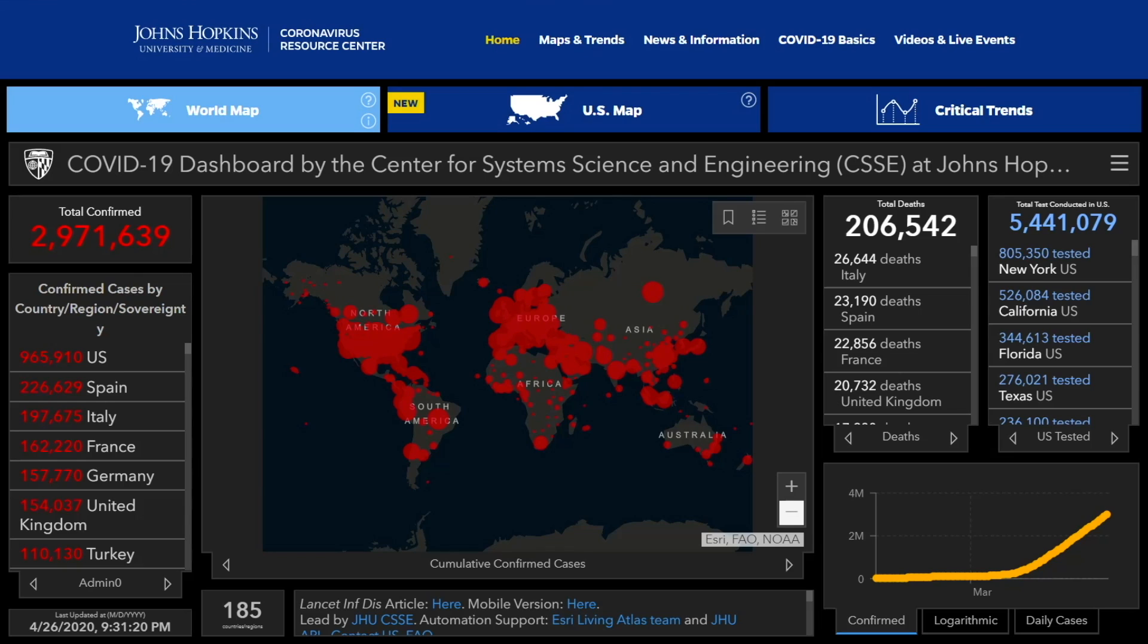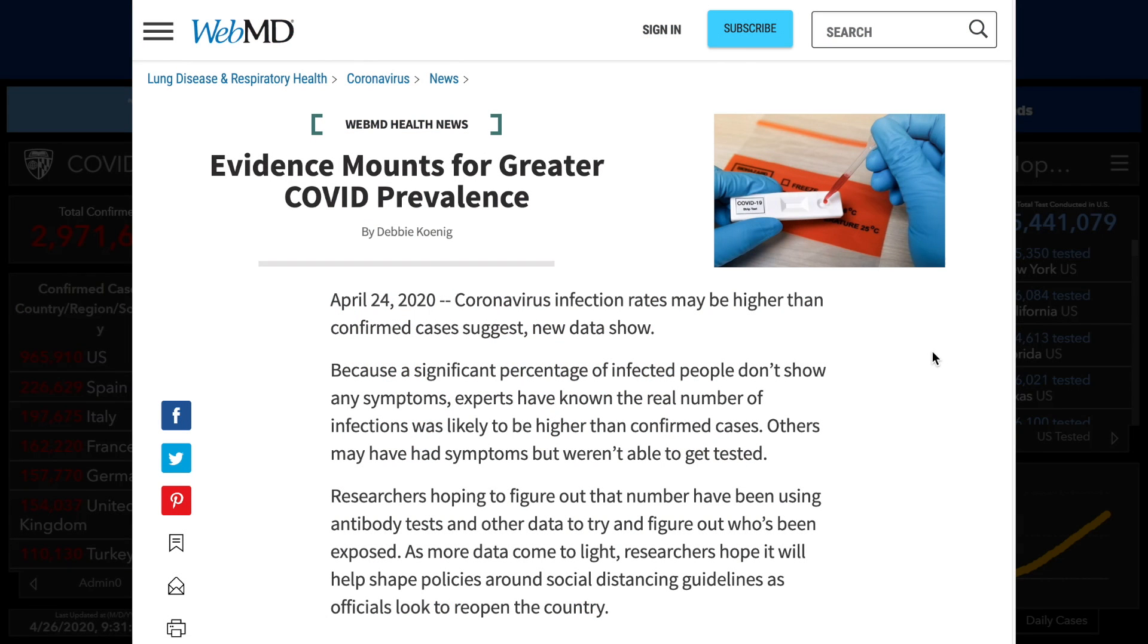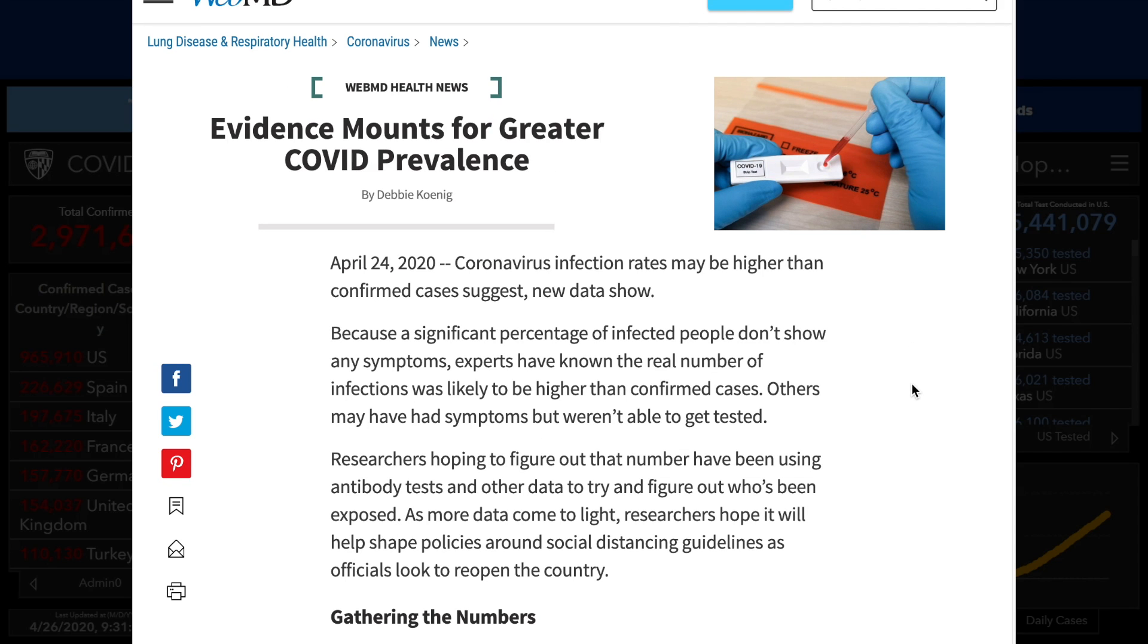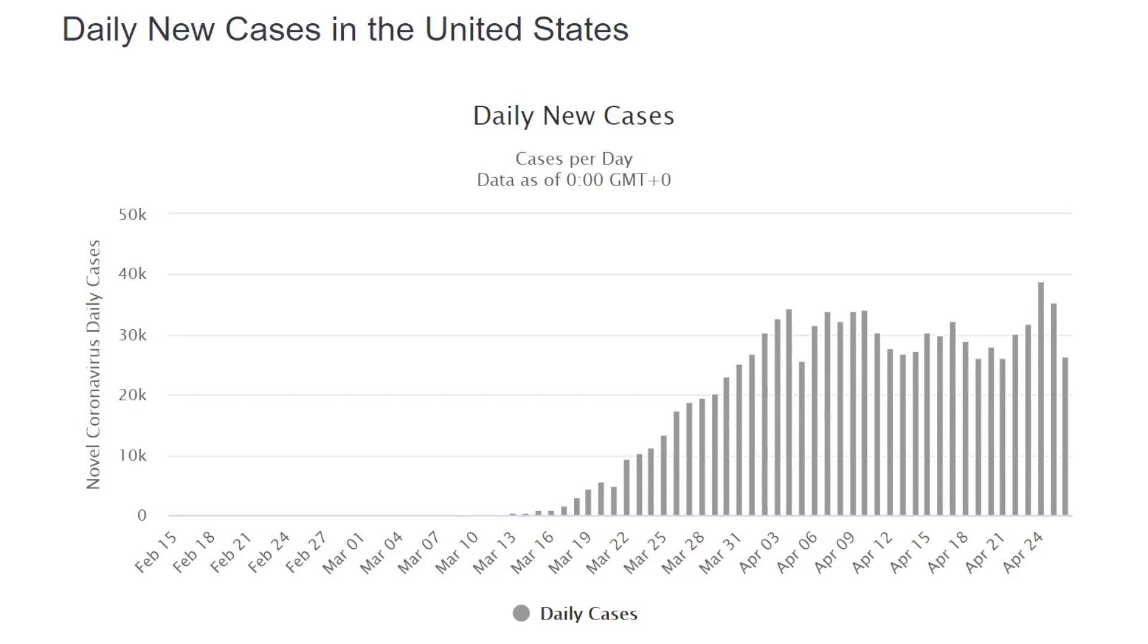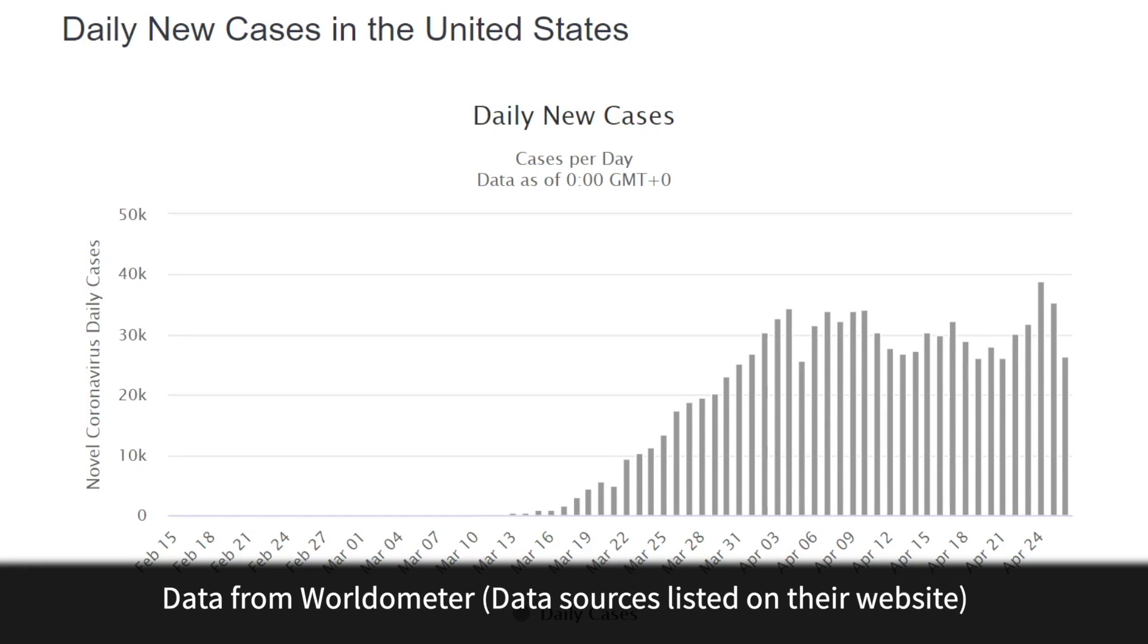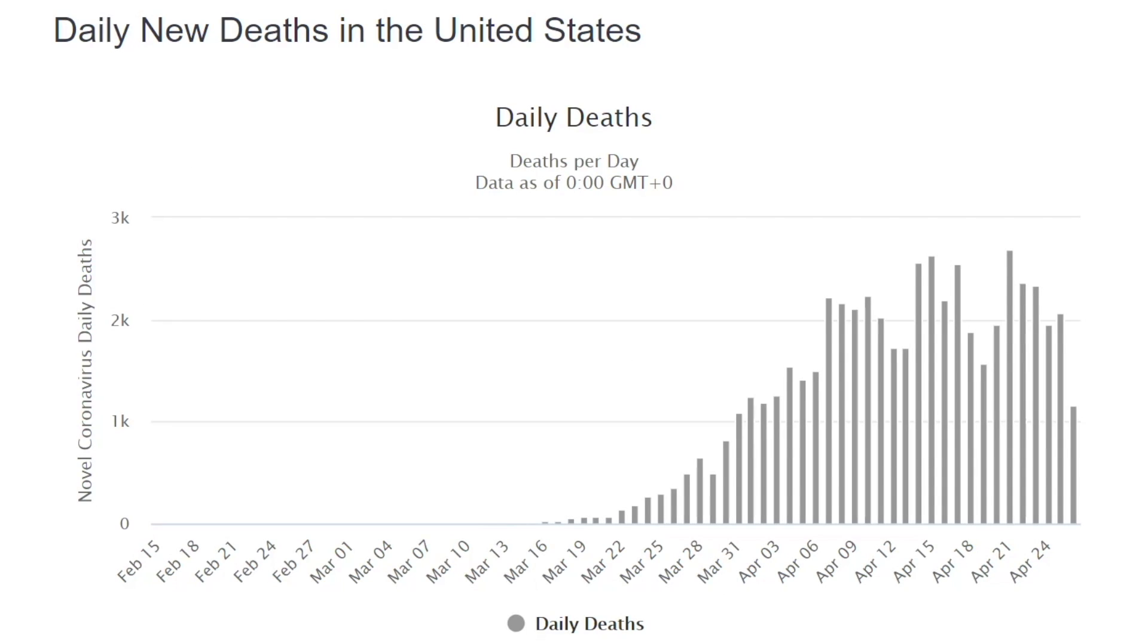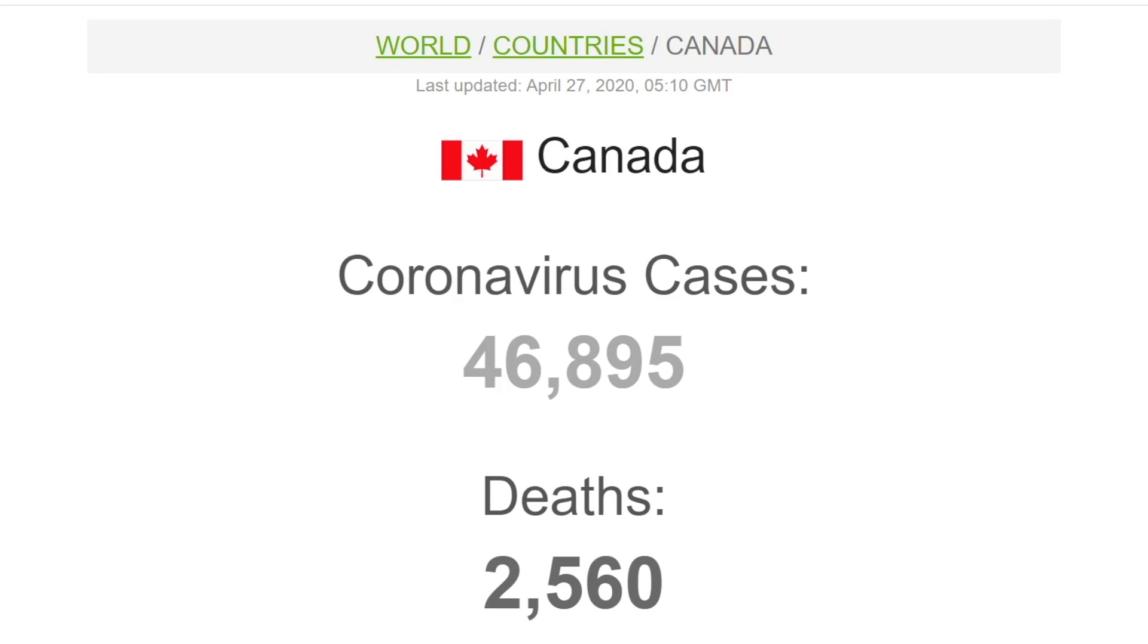We are at nearly 3 million total confirmed cases, although the numbers seem much higher than that based on epidemiological studies with antibody testing. In the United States, we're at nearly 1 million cases, and it seems the daily new cases have plateaued. In terms of daily deaths, it's too early to tell whether or not we're having a decline. In Canada, 46,000 cases and 2,500 deaths.